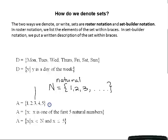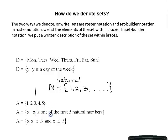We could use set builder notation: A is the set of all X such that X is one of the first five natural numbers. Even though it says one of the first five natural numbers, if we change from set builder notation to roster notation we would have to list 1, 2, 3, 4, and 5. You can write that more compactly using mathematical symbols.